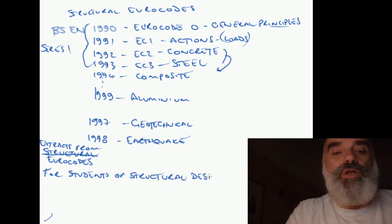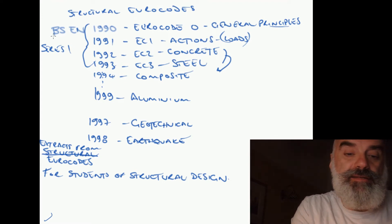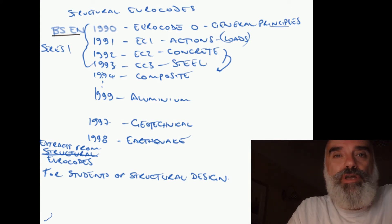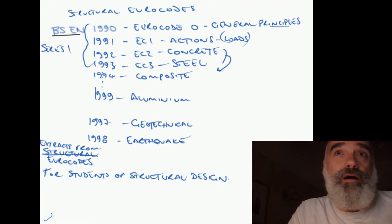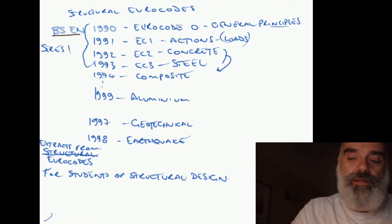That's a publication which has extracts from all the Eurocodes: 1990, 1991, 1992, etc., and breaks them down into chapters. Each chapter deals with one of these BS EN codes and has the main elements of those codes set out for students of structural design. They are quite sufficient to do most designs. In actual fact, most designs, certainly for early career designers or where you're not doing too many specialist parts of structural design, will be covered by the extracts from the codes in that book published by BSI.